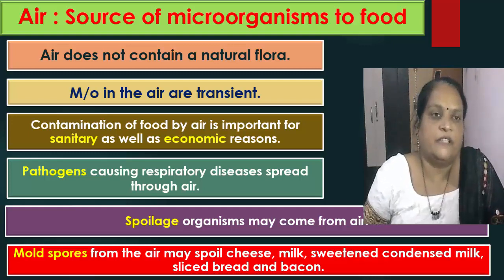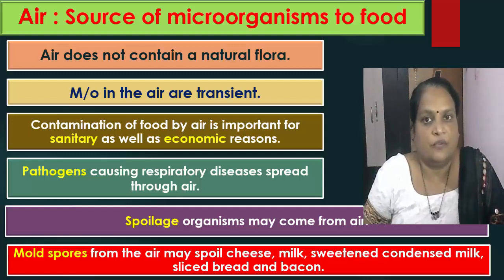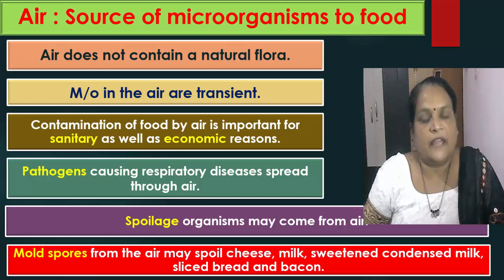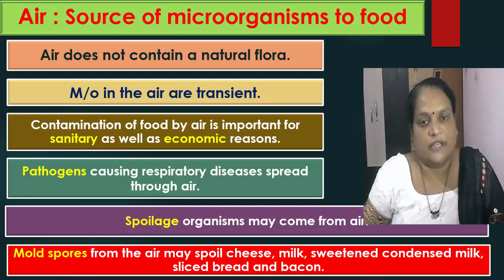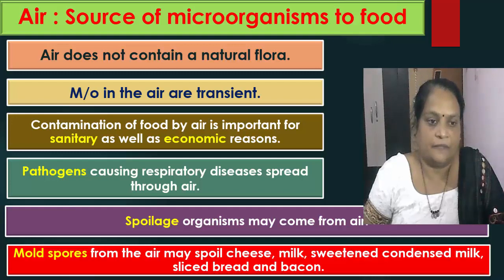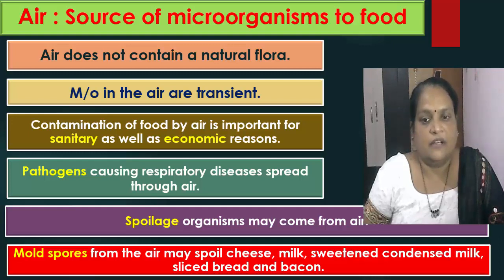Now we will discuss air as a source of microorganisms to food. Air does not contain a natural flora; microorganisms in the air are transient. Contamination of food by air is important for sanitary as well as economic reasons. Pathogens causing respiratory tract diseases are spread through the air. Spoilage organisms may also come from the air. Mold spores from the air may spoil cheese, milk, sweetened condensed milk, sliced bread and bacon.